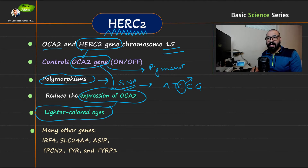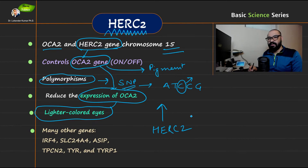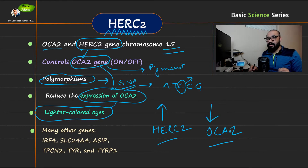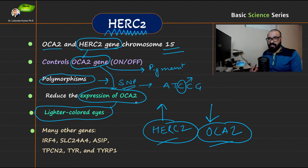When HERC2 reduces OCA2 expression, lighter colored eyes are produced — it basically downregulates OCA2. So when you have high expression of HERC2, you have downregulation of OCA2. This is important for exams: if asked what happens with high expression of HERC2, you will have light-colored eyes. If you understand how this regulation works, you can answer that question very easily.